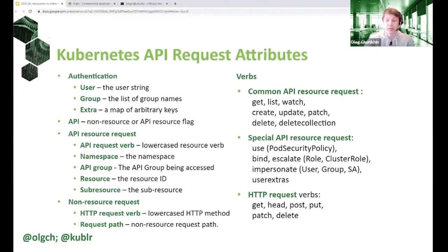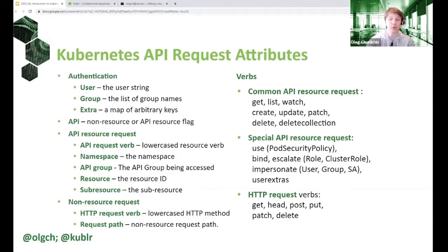The Kubernetes API server, when it receives a request from a client, does standard processing steps before deciding whether to allow the request to proceed. First is authentication — the API server uses different pieces of information in the HTTP request to identify the person or component who sent it. We'll talk through the methods of authentication in a few slides.